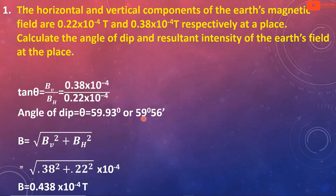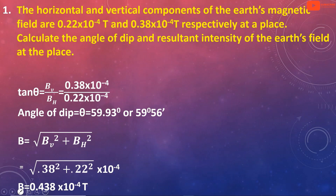Now we calculate the resultant intensity. B equals the square root of Bv squared plus Bh squared. We have the square root of 0.38² plus 0.22² multiplied by 10⁻⁴. The resultant intensity B is equal to 0.438×10⁻⁴ tesla.